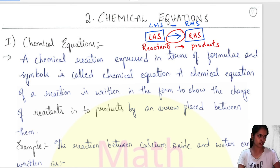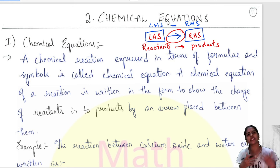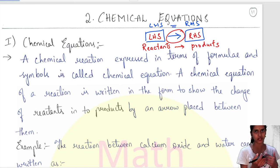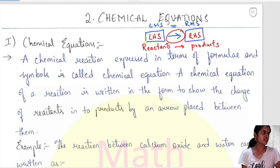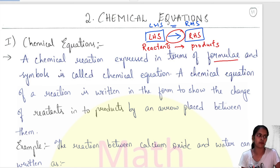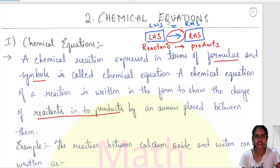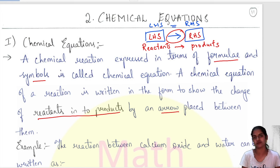Let me give you some examples. You'll have a reactant, and some chemical reaction happens — they may chemically combine, they may chemically decompose — and you'll get a product. On the reactant side you can have one or more chemicals, and on the product side also, after the chemical reaction, you can have one or more products. A chemical reaction is expressed in terms of formula — instead of writing the names, you write formula with symbols. A chemical equation shows the change of reactants into products, with an arrow mark in between.